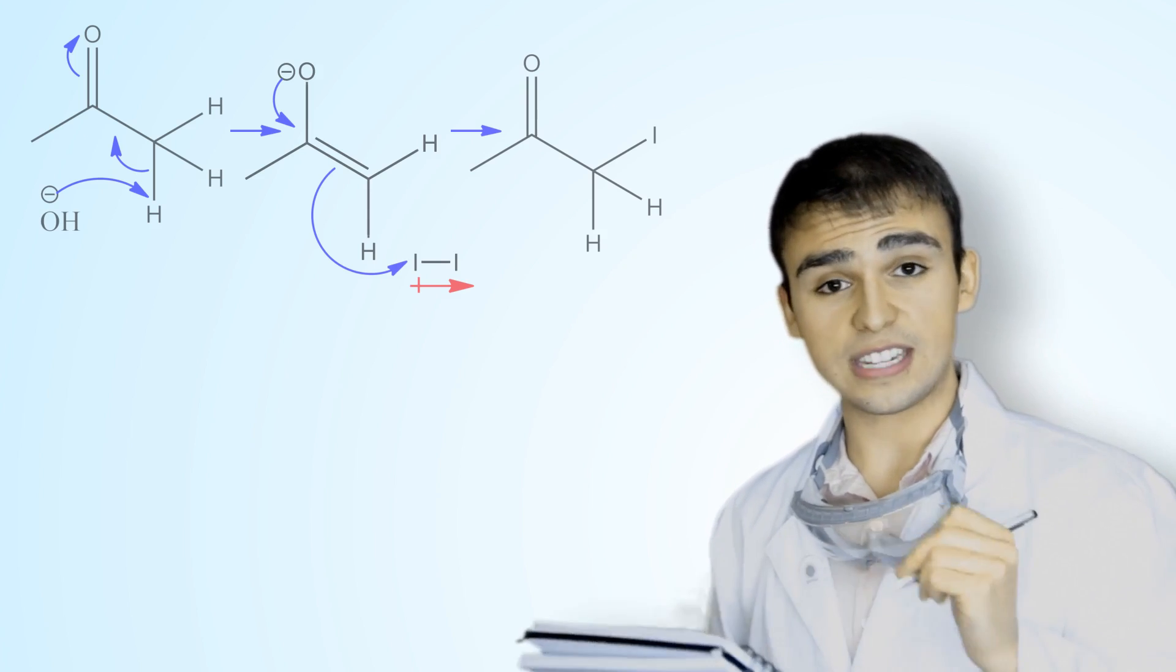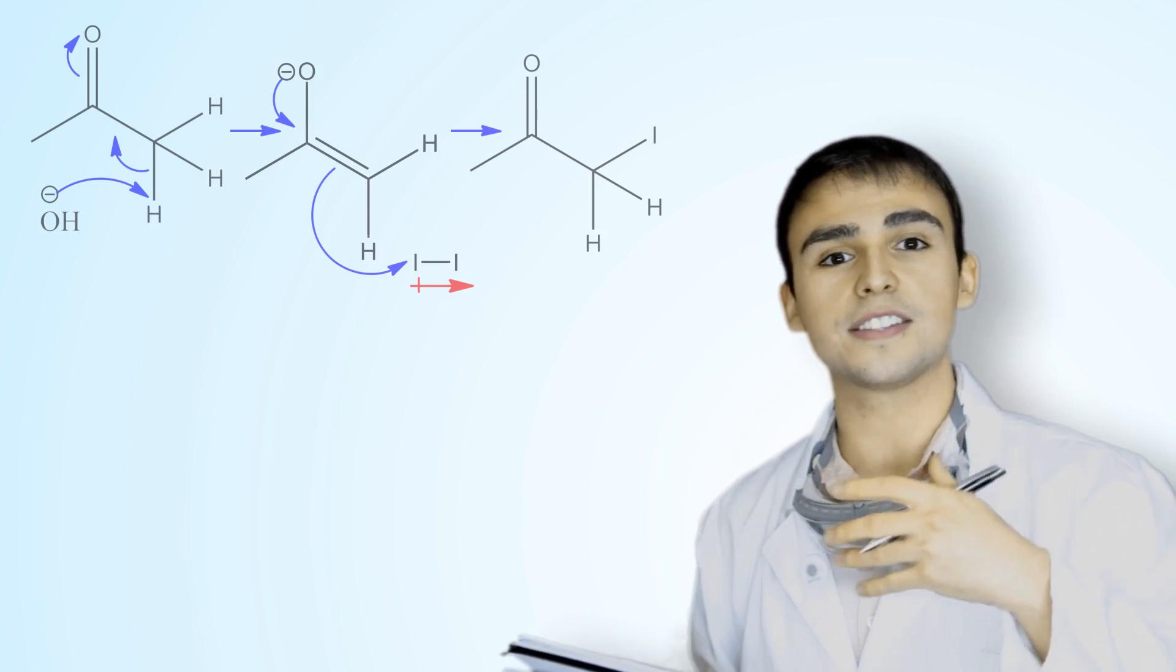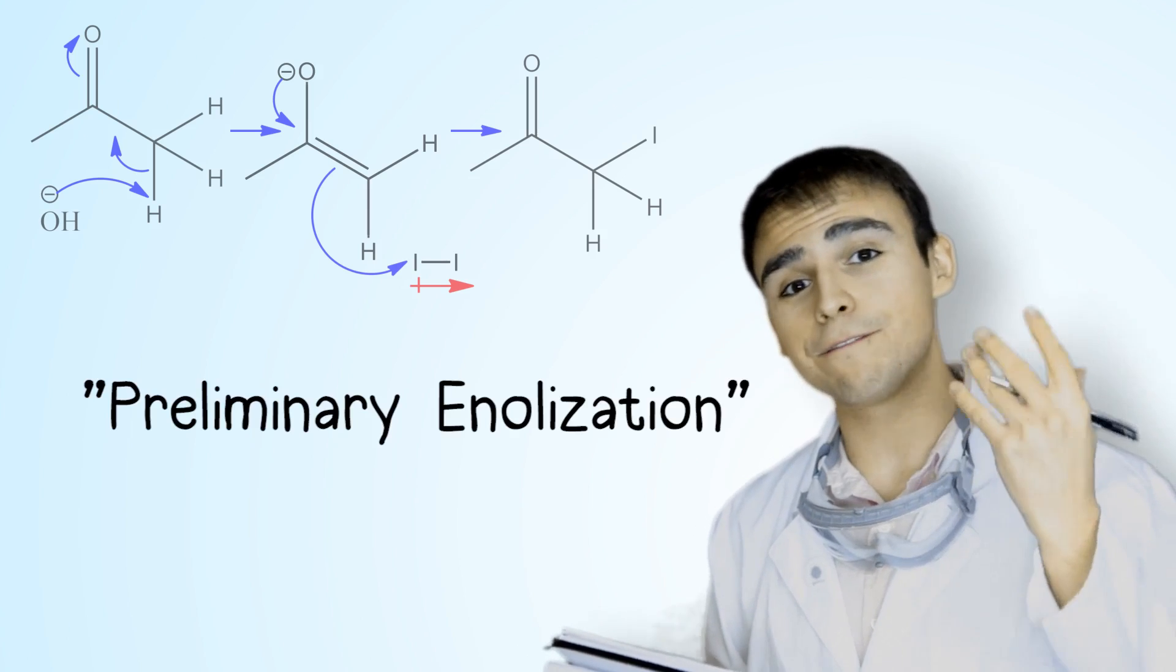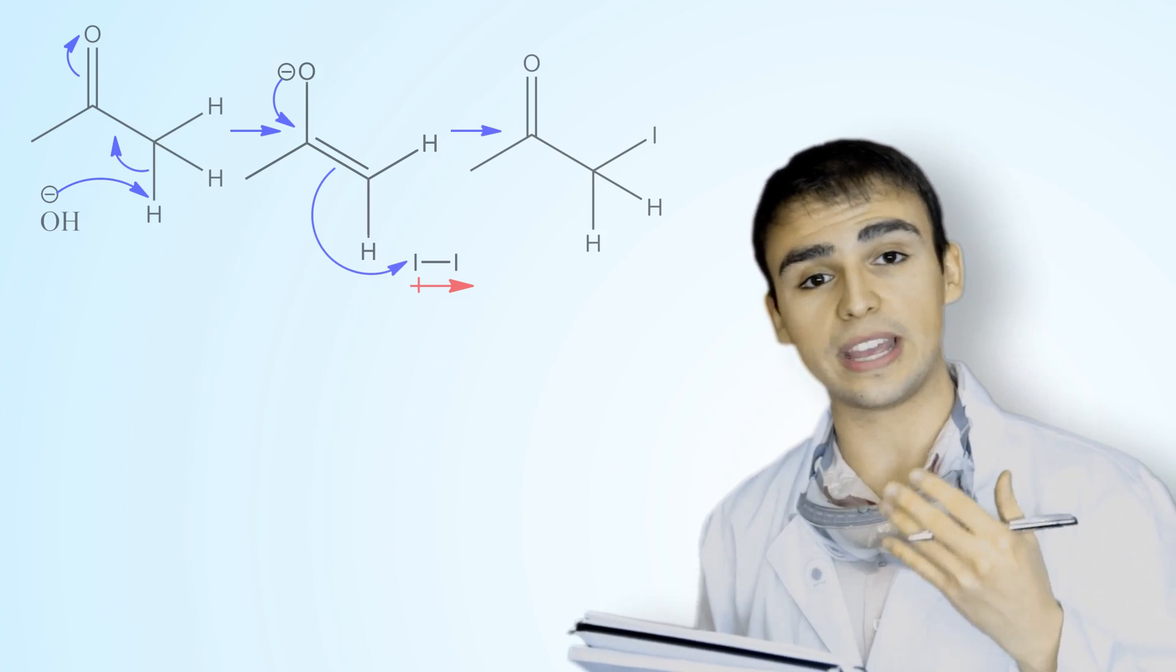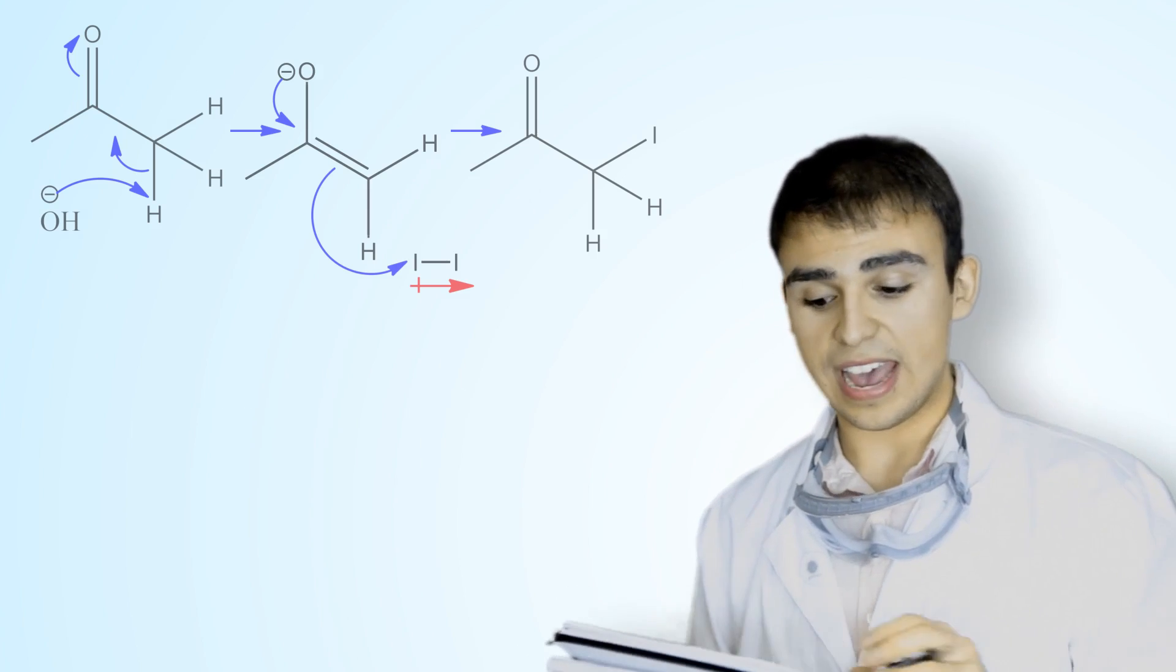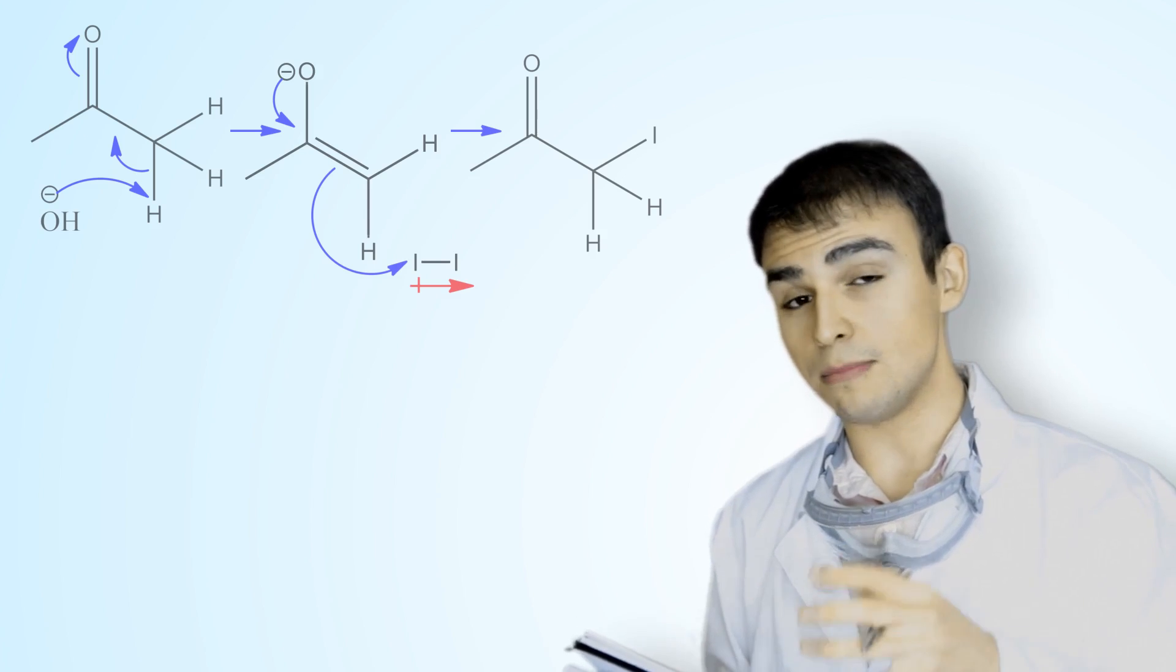This first step that we've just done is known as preliminary enolization. It's the first time we've formed that enolate intermediate. This is the rate determining step. After this, the reaction will proceed much faster.